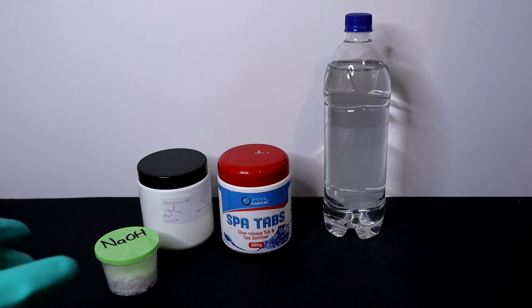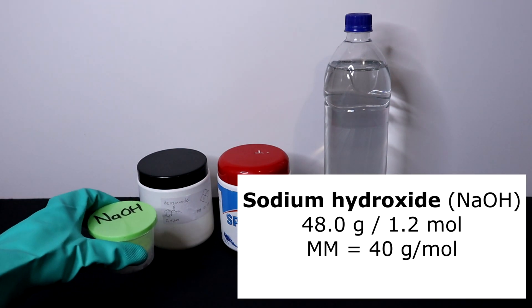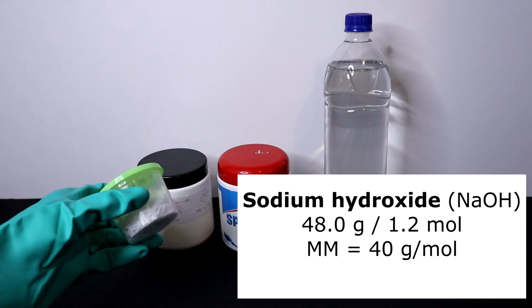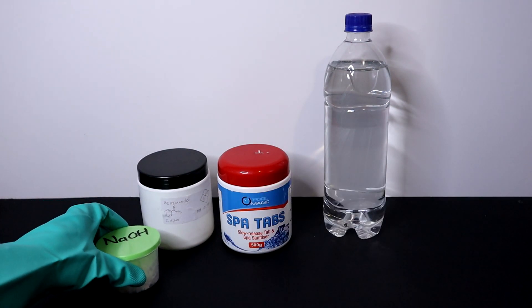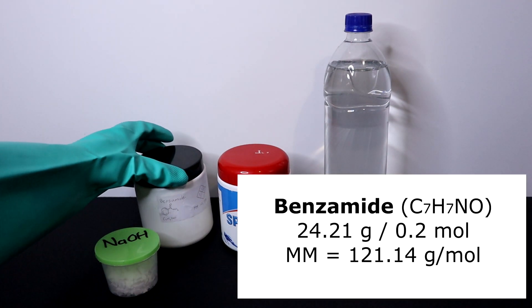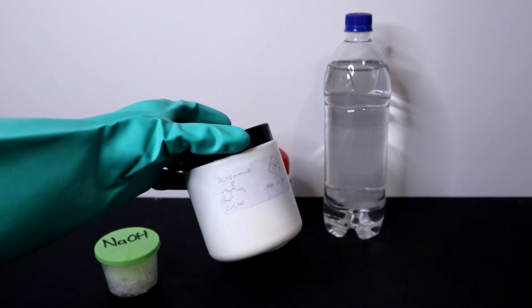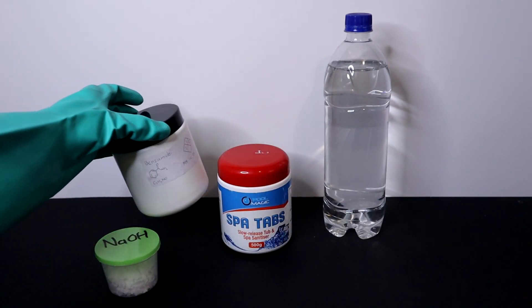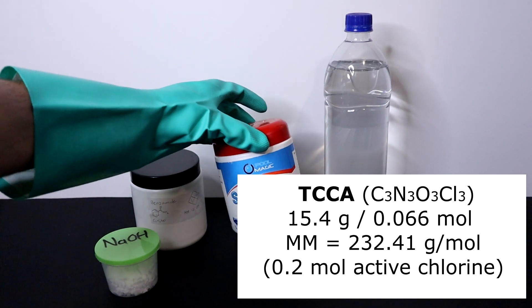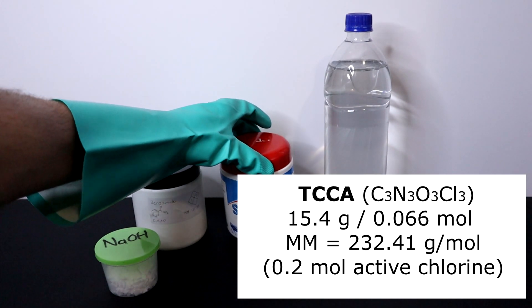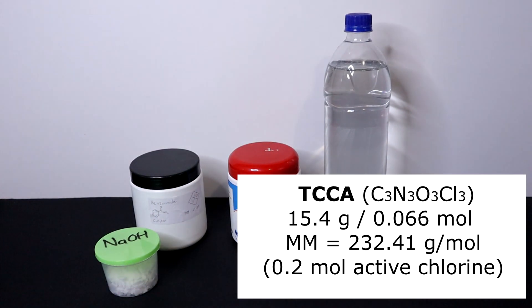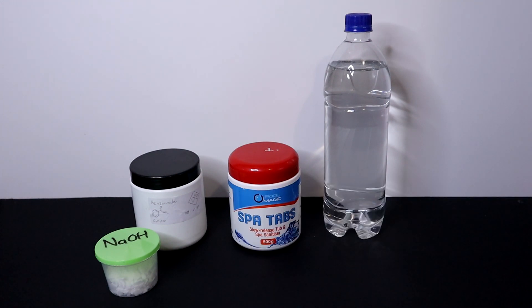In today's procedure I'll be using the following: 48 grams of sodium hydroxide representing 1.2 moles, 24.21 grams of benzamide or 0.2 mole, and 15.4 grams of trichloro isocyanuric acid or TCCA for short, equivalent to 0.066 mole. This will react to provide 0.2 moles of hypochlorite. Lastly some water and ice will also be needed.